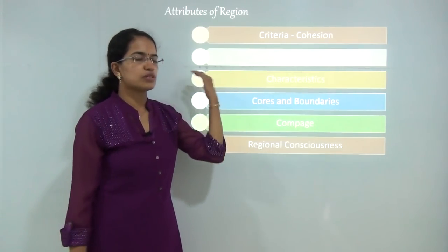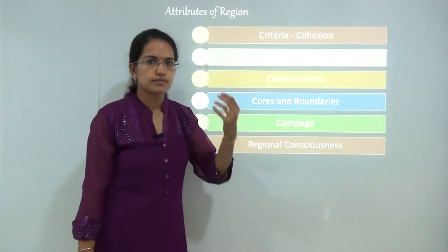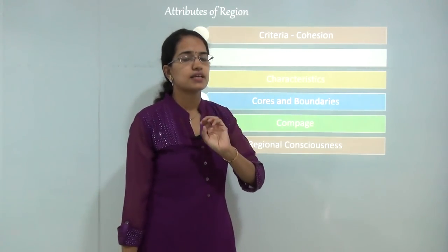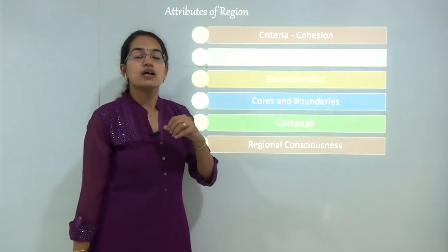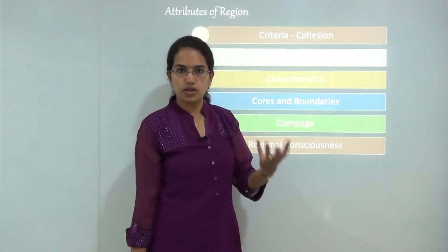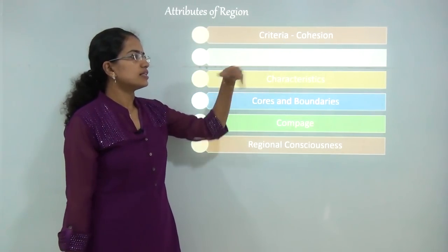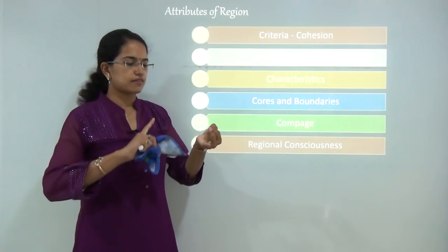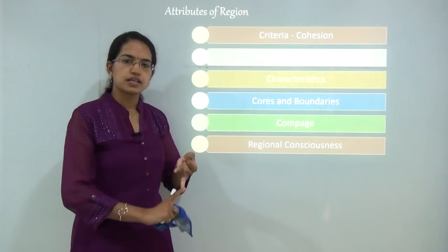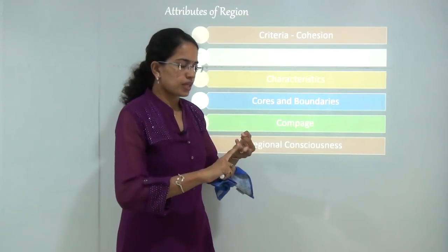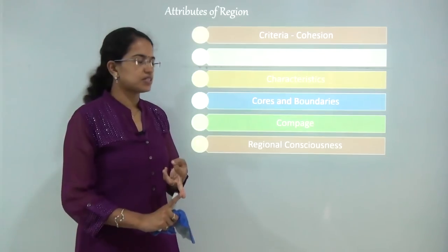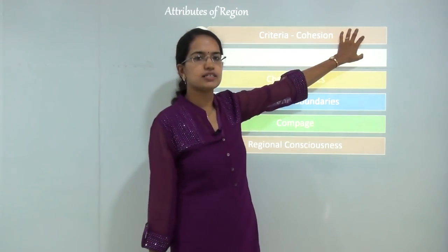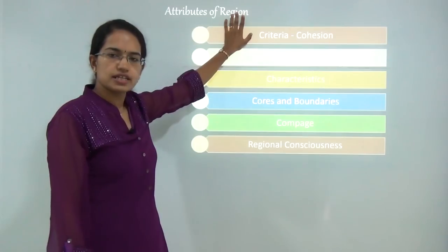This can be homogeneous soil, homogeneous climate, homogeneous weather - things I am talking about in terms of geomorphological aspects. There can be other aspects such as social parameters: quality of life, availability of sanitation facilities, healthcare and infrastructure facilities. There can be various criteria based on which you can define a region.